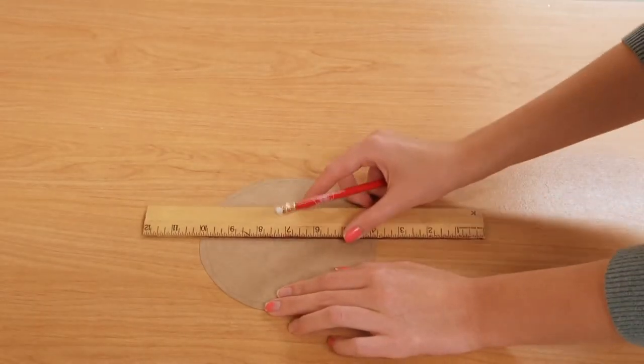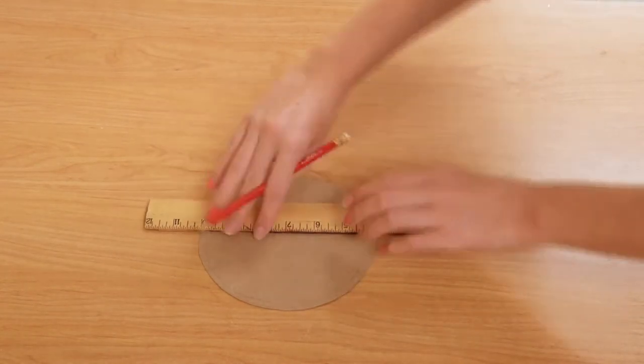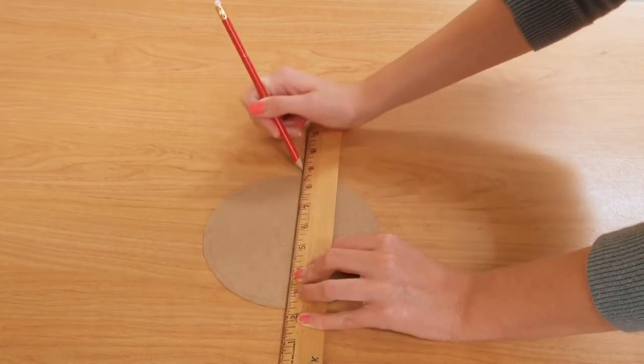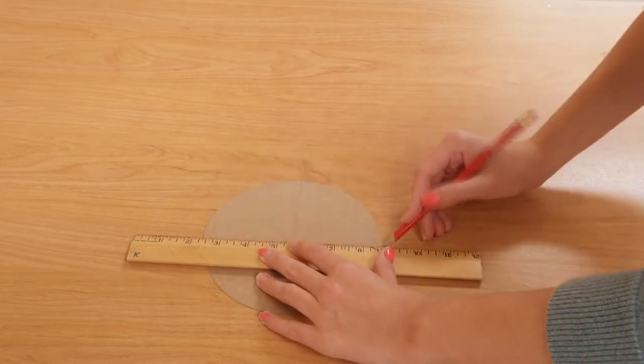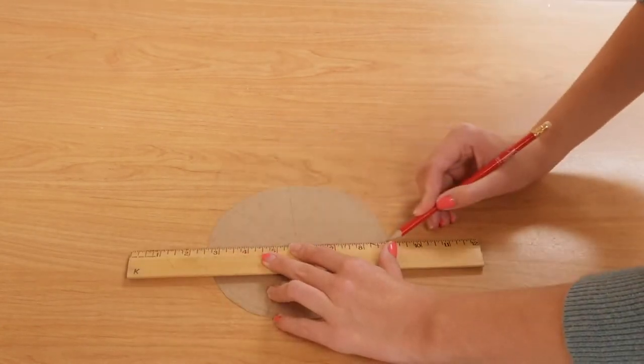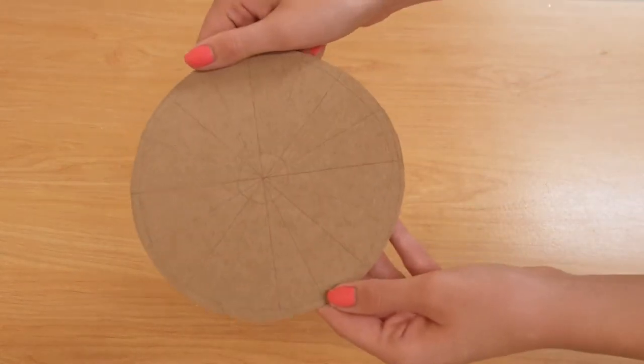Next, take your ruler and draw even and center lines going from one end of the circle to the other. I drew eight lines, which gave me 16 triangle portions. This is what it should look like.